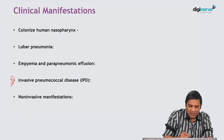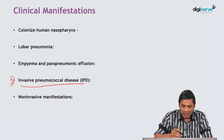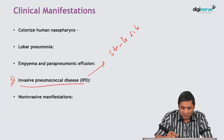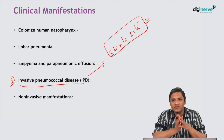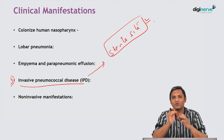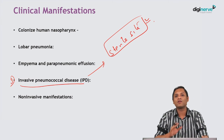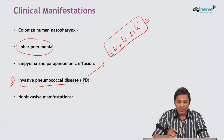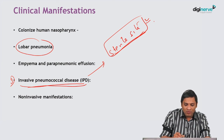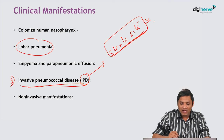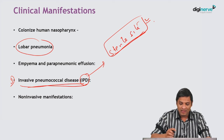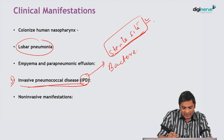Apart from lobar pneumonia, it can cause pulmonary complications such as empyema and parapneumonic effusion. Empyema means formation of pus in the pleural cavity. A third important clinical condition is invasive pneumococcal disease, characterized by presence of the organism in normally sterile sites. Classical examples include bacteremia and meningitis.